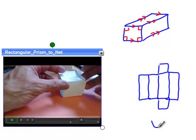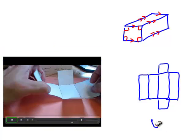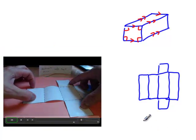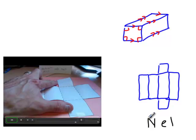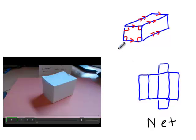And you can see, oh, this is, I should label this. And you can see that this net just matches up with this isometric sketch.